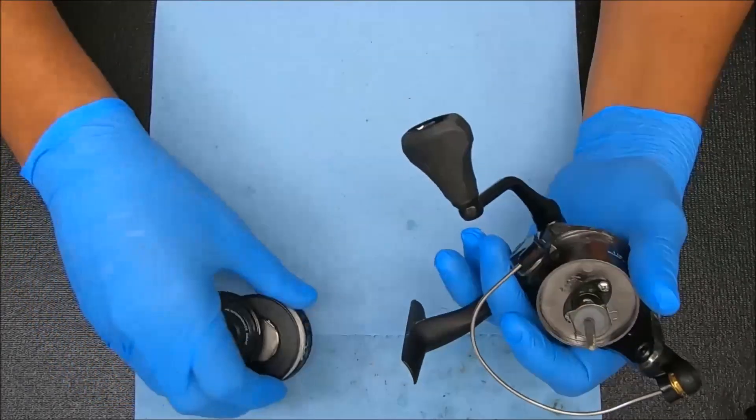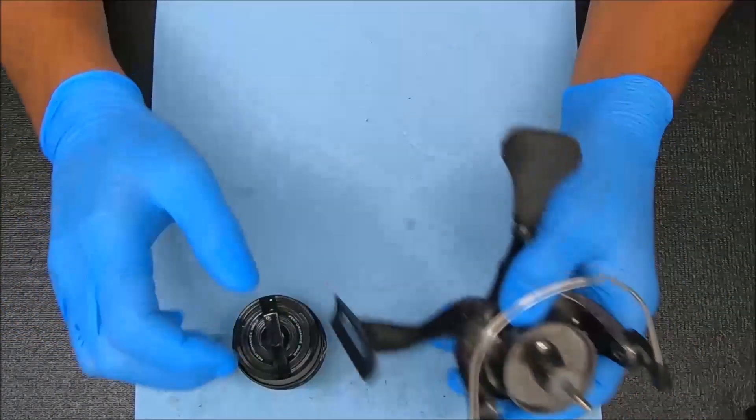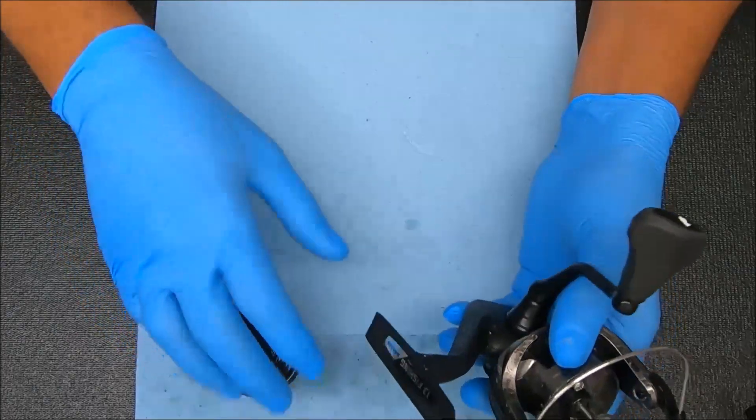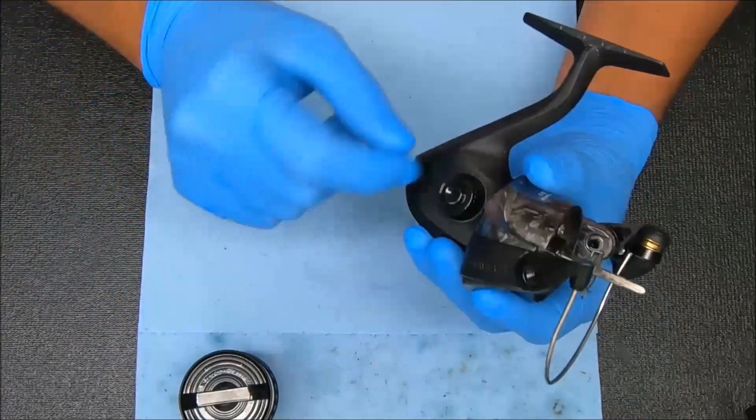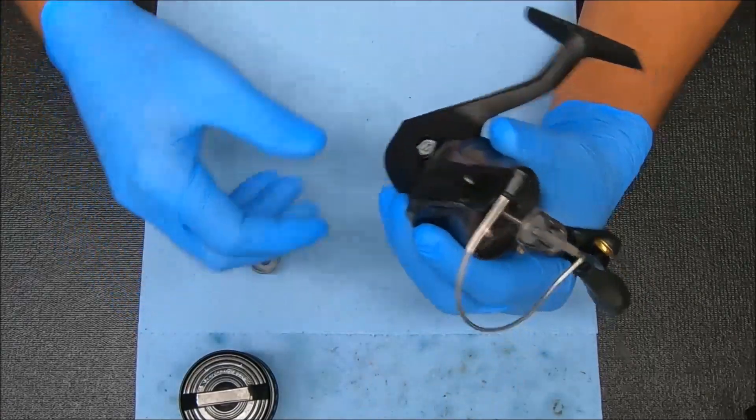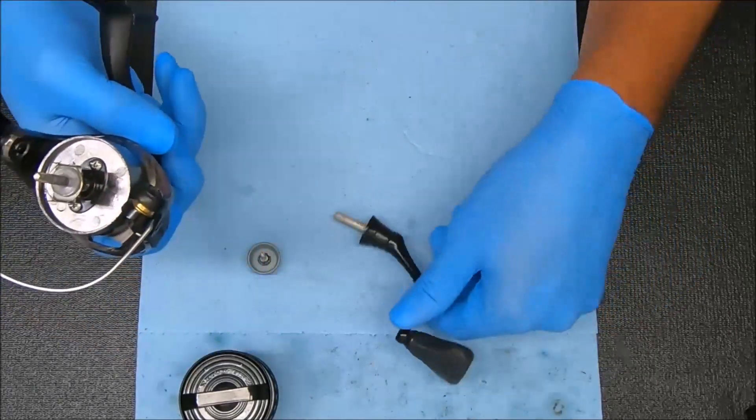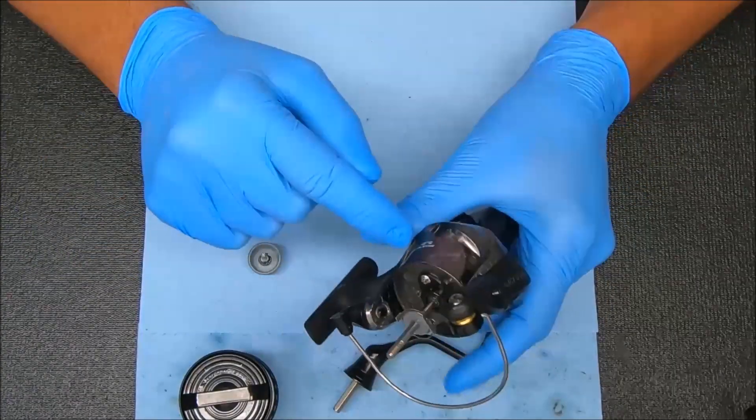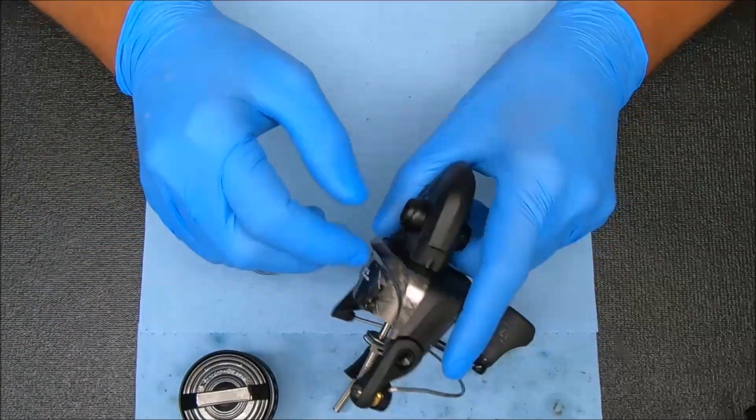The reel I'm working on today is a 13 Fishing Calon O or Ohm 3000 size. So to get the handle off, I'm going to unscrew this, pull this out just like so, and we're going to remove this rotor so we can open this side plate up.